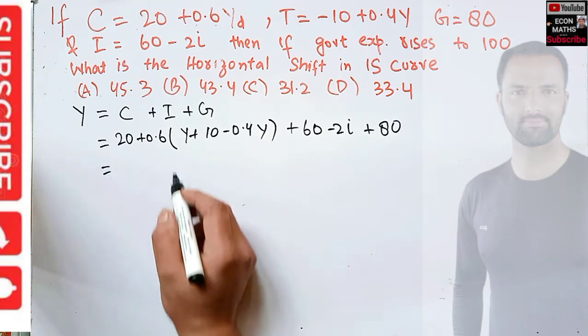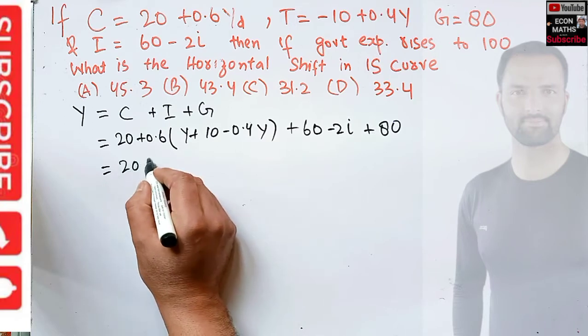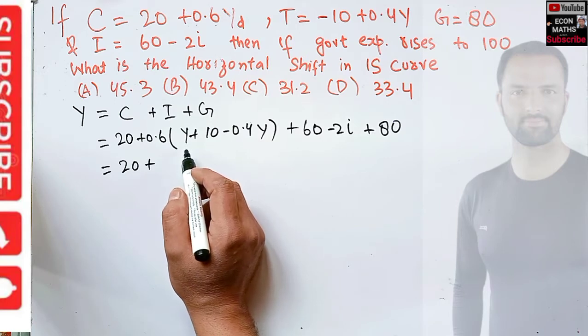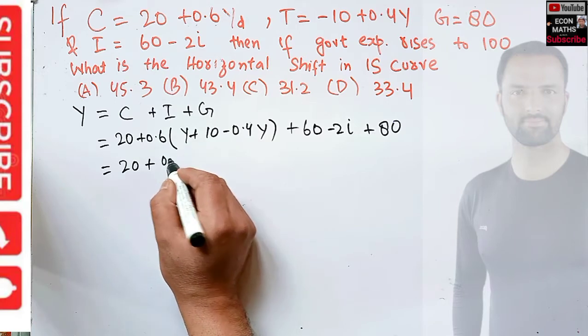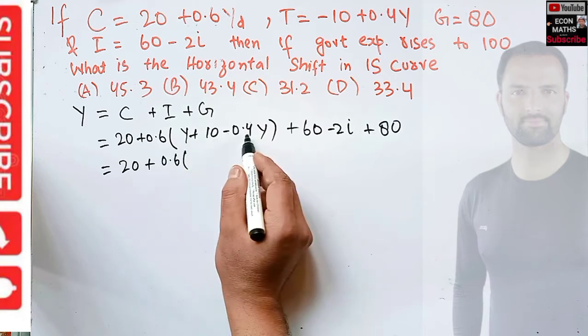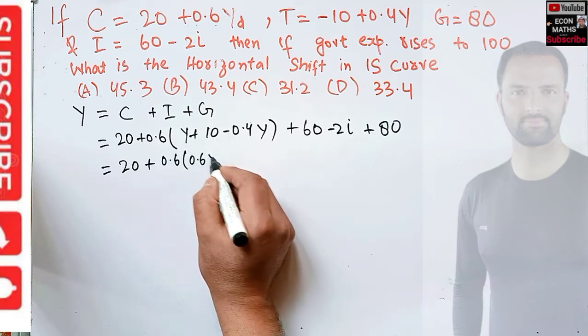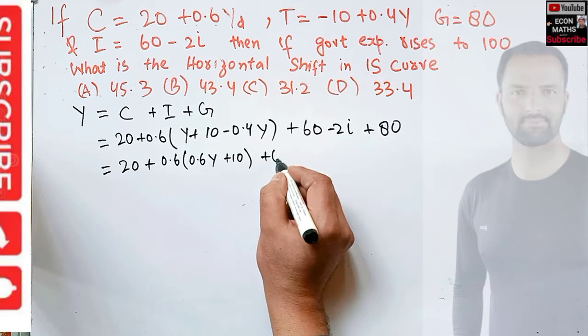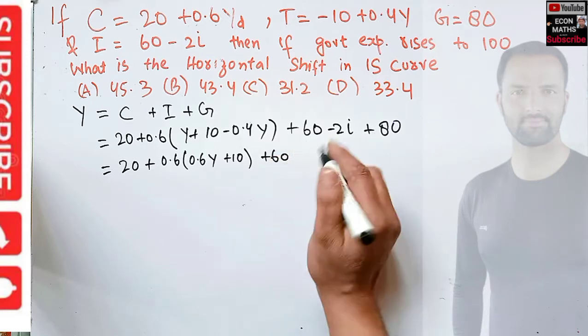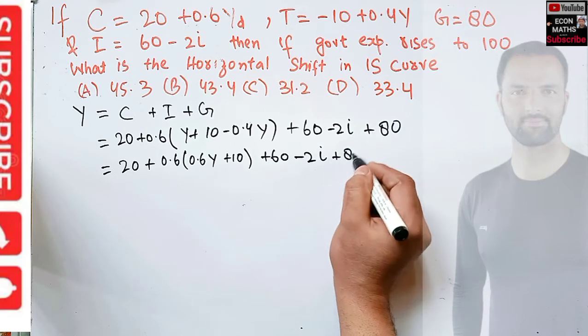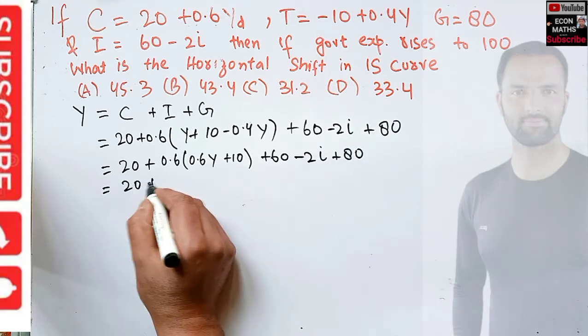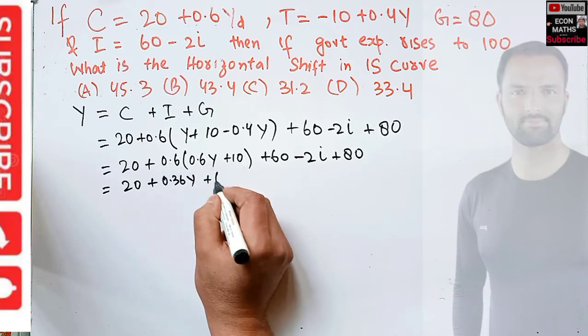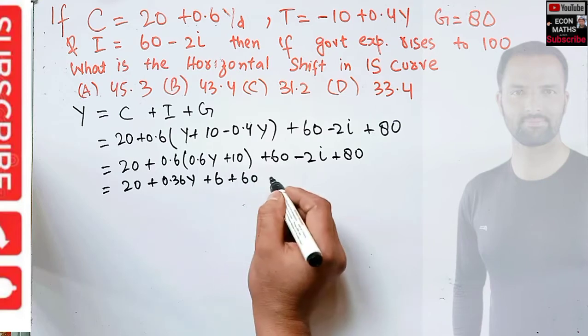Now we solve for Y and i. We have Y = 20 + 0.6(Y - 0.4Y + 10) + 60 - 2i + 80. So we have 20 + 0.6 × 0.6Y + 0.6 × 10 + 60 - 2i + 80.